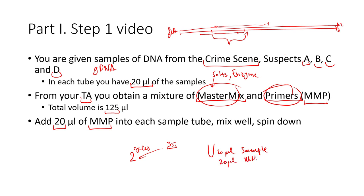So in the end in each PCR tube you will have 20 microliters of your sample and 20 microliters of the MMP. You keep everything on ice because in this master mix we have enzyme which is temperature sensitive and we really want it to be intact until we put it in the thermocycler.